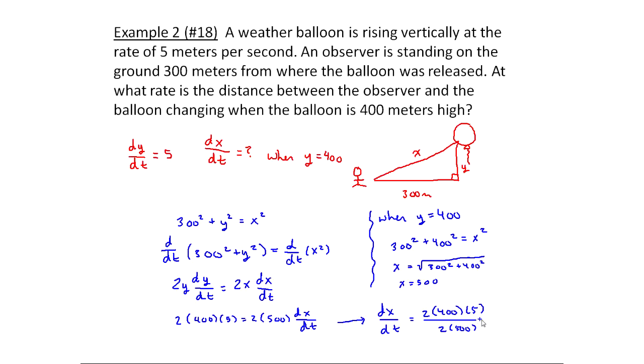So I'm going to do that right here. dx/dt will equal 2 times 400 times 5, which you could have already calculated, divided by 2 times 500. And when I go through and calculate this, I get 4. So it ends up being 4. And remember that all this is talking about meters. And in the first instance it's meters per second, so this would be meters per second.